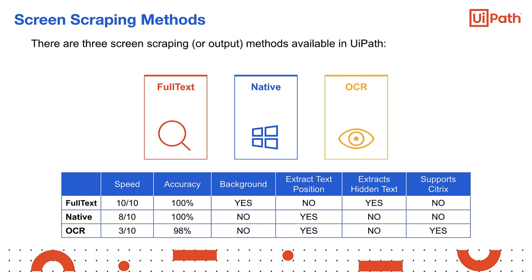To extract text from a UI element, the user can use one of the three screen scraping methods that UiPath supports: the FullText method, the Native method, and the OCR method. The FullText method is the default output method. It is the fastest method with 100% accuracy and can work in the background. The FullText method can extract hidden text — for example, fetching options available from a drop-down list. However, the FullText method does not support Citrix, which is a virtual environment, and it does not capture text position and formatting.